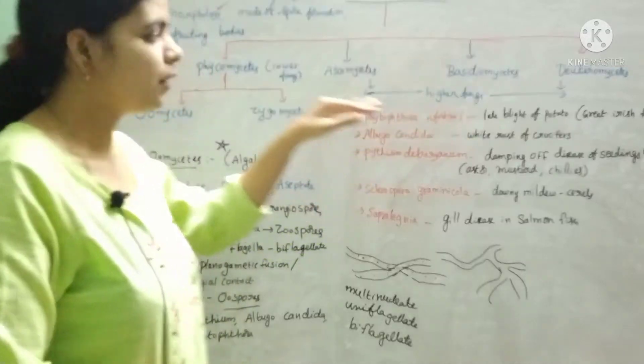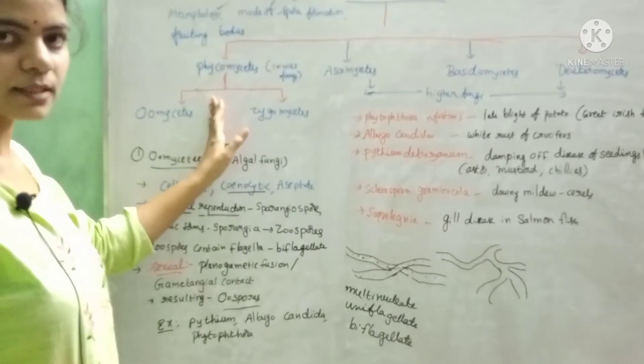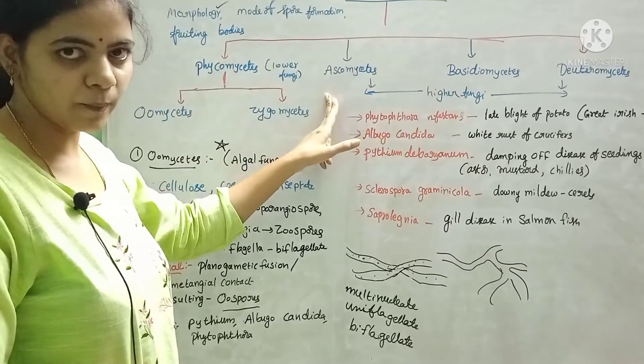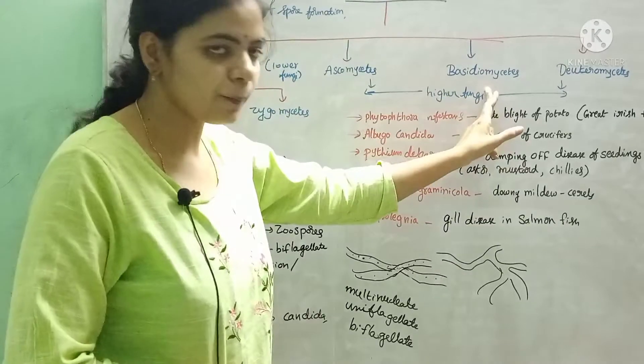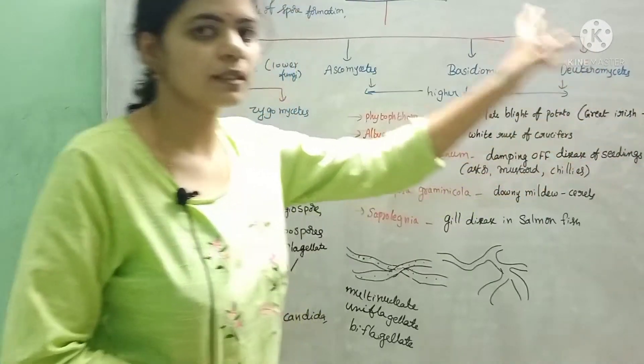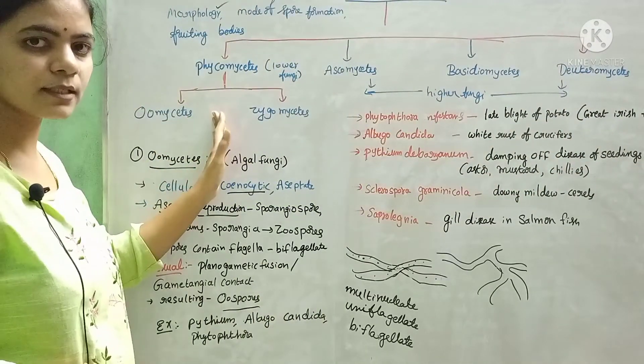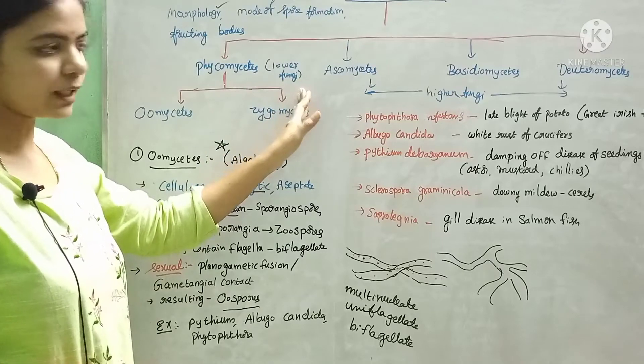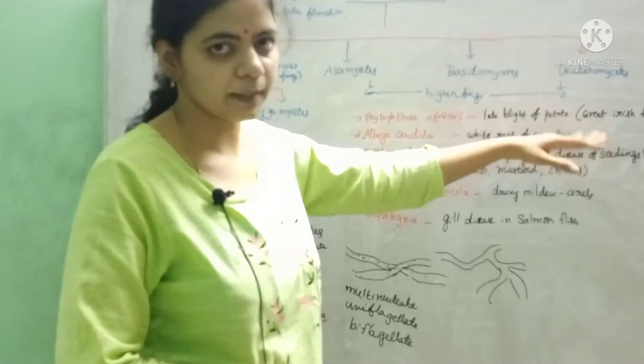Based on three characters, the fungi were classified into four. The first one is phycomycetes, second is ascomycetes, basidiomycetes, and deuteromycetes. The first one is called lower fungi and the remaining three fungi are called higher fungi.